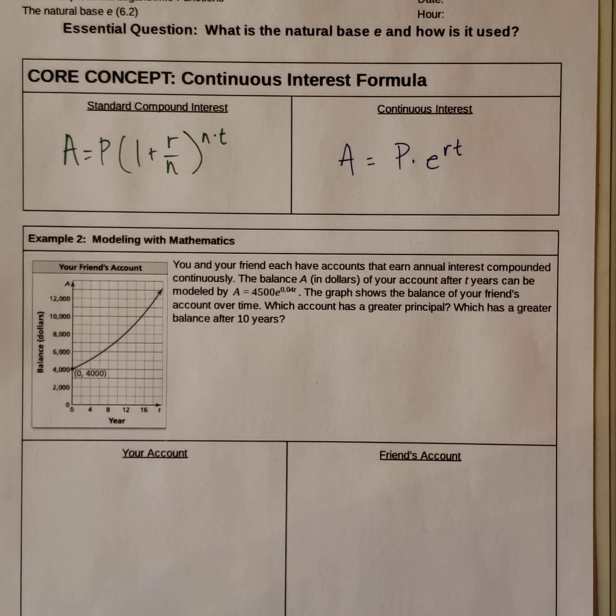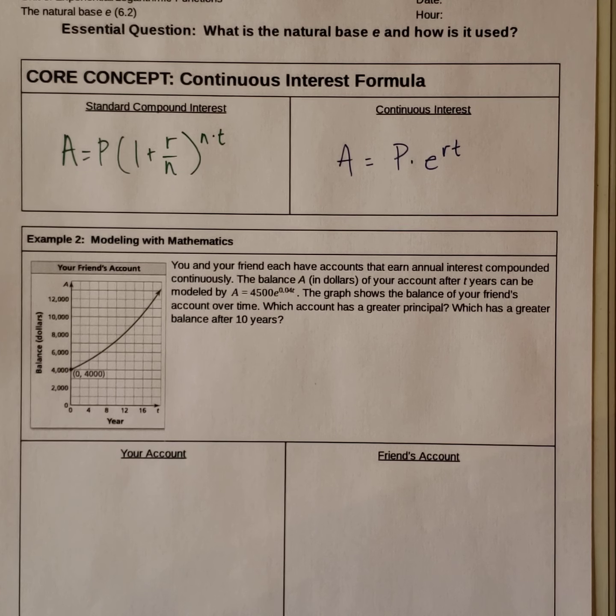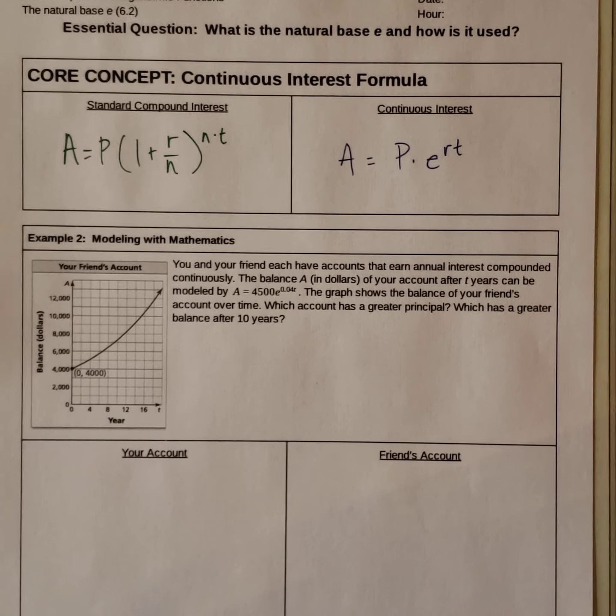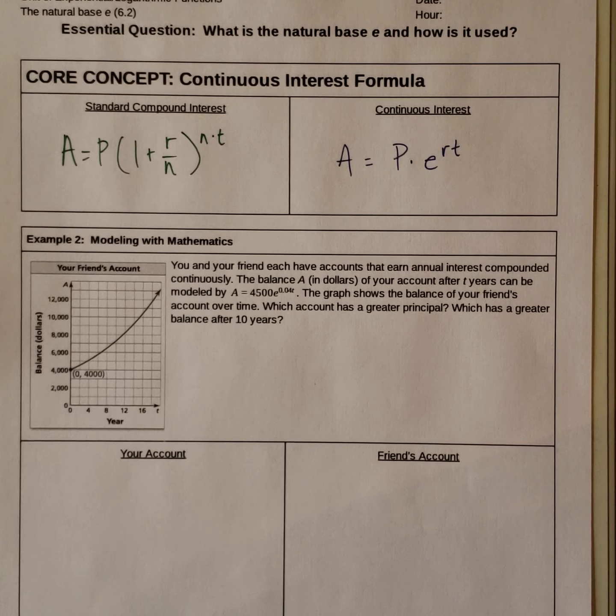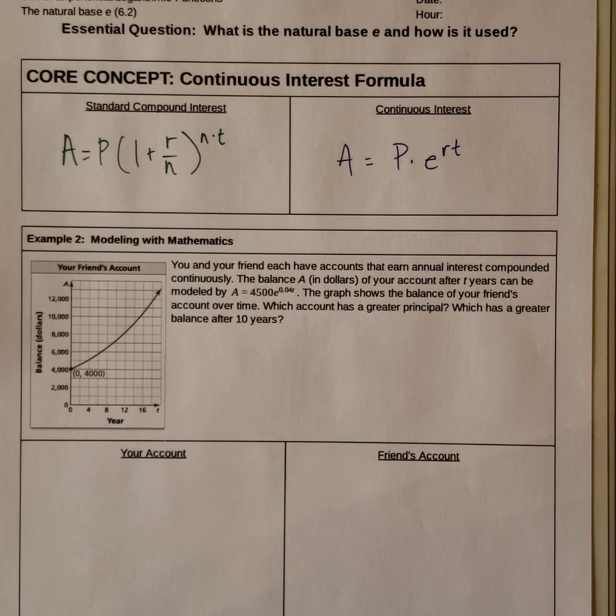So example two: You and your friend each have accounts that earn annual interest compounded continuously. The balance A in dollars of your account after t years can be modeled by A equals 4,500 times e raised to the 0.04t. The graph shows the balance of your friend's account over time. Which account has the greater principal? Which has a greater balance after 10 years?